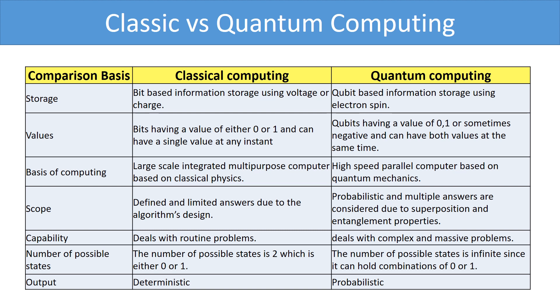The first difference we have already learnt that classic computers are bit based whereas quantum computers are qubit based. Next, bits having a value of either 0 or 1 whereas qubits having a value of 0, 1 or sometimes negative and can have both values at the same time. Classic computers are based on classical physics whereas quantum computers are based on quantum mechanics. Classic computers have defined and limited answers due to the algorithm's design. Quantum computers have probabilistic and multiple answers.